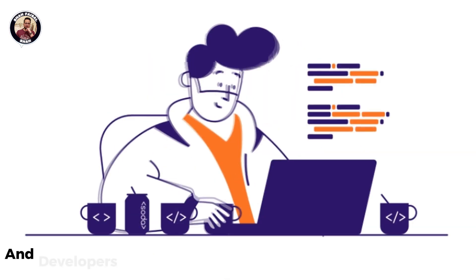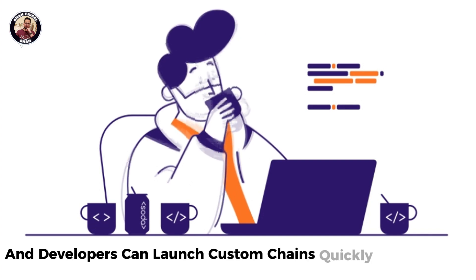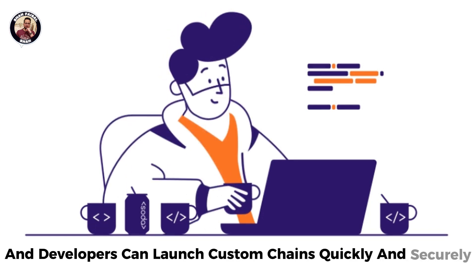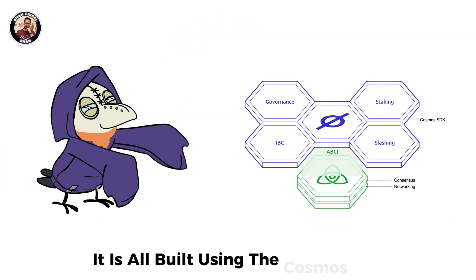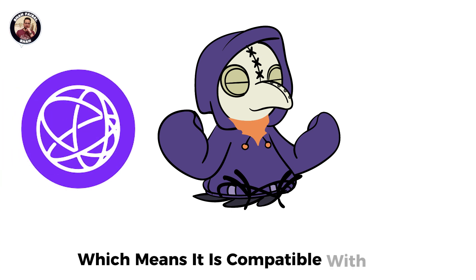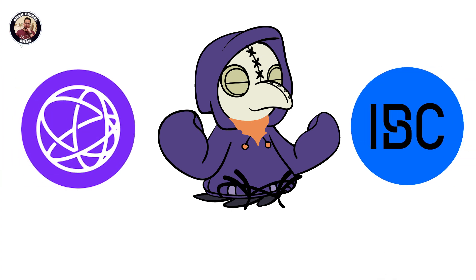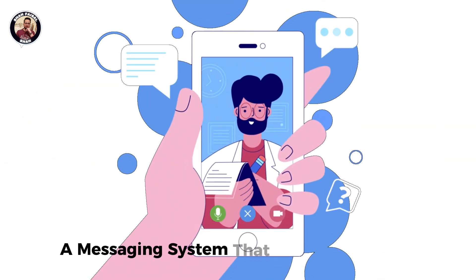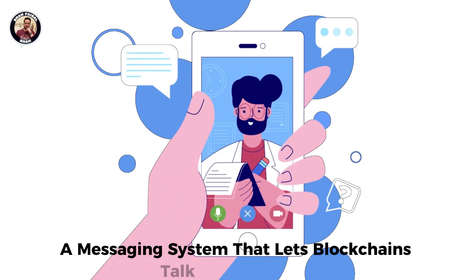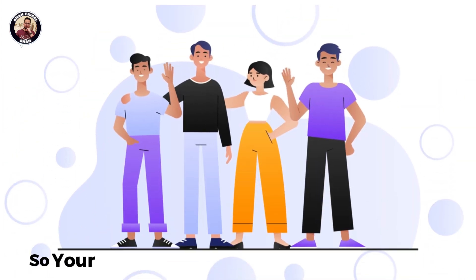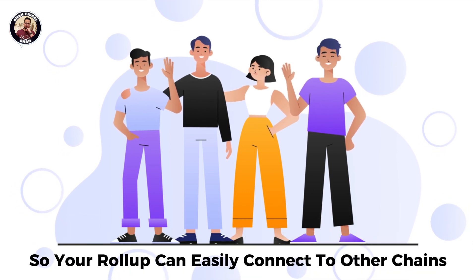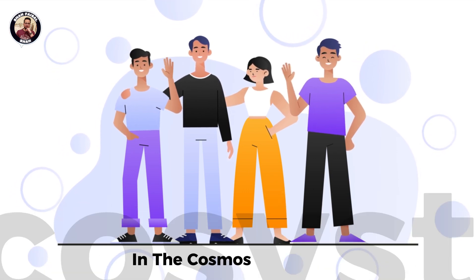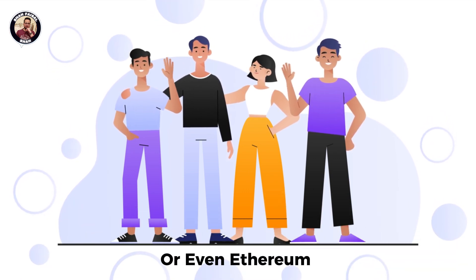Developers can launch custom chains quickly and securely. It is all built using the Cosmos SDK, which means it is compatible with IBC, a messaging system that lets blockchains talk to each other. So your roll-up can easily connect to other chains in the Cosmos ecosystem, or even Ethereum.